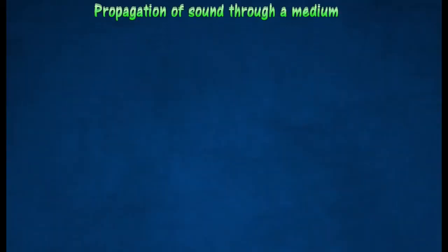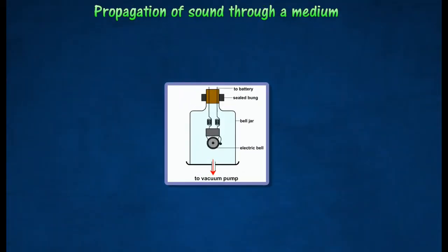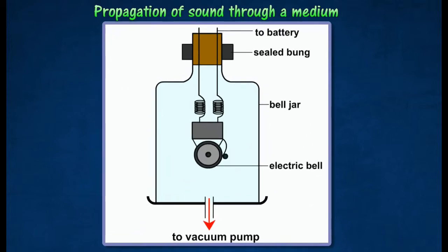Bell jar experiment is carried out to prove that sound waves cannot be propagated in vacuum. An electric bell is suspended in a glass bell jar, placed on a plate and completely sealed off using grease. Air is gradually removed from the inside of the bell jar using a vacuum pump.